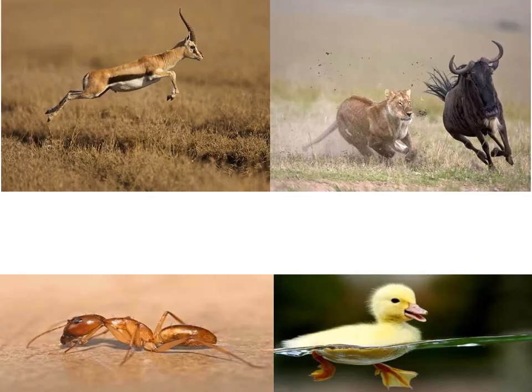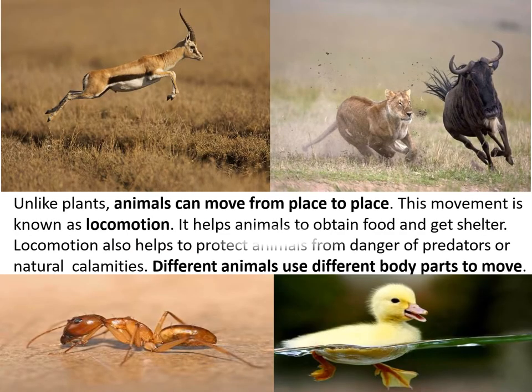Dear children, unlike plants, animals can move from place to place, which means plants cannot move but animals can. This movement is known as locomotion. It helps animals to obtain food and get shelter. Locomotion also helps to protect animals from the danger of predators or natural calamities. Different animals use different body parts to move.